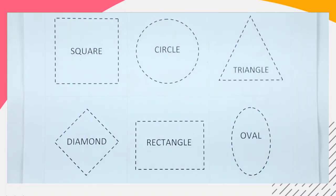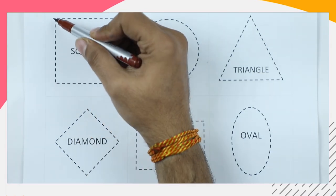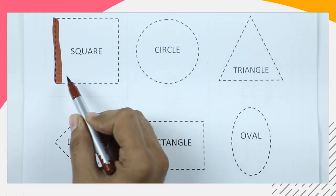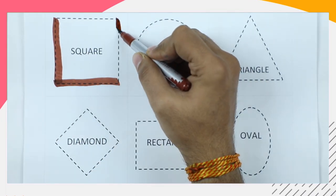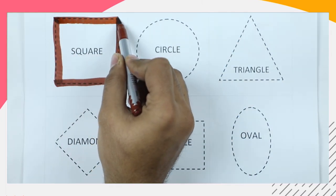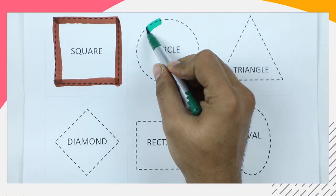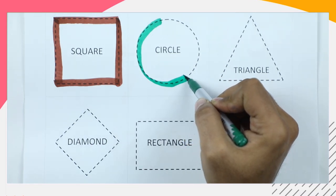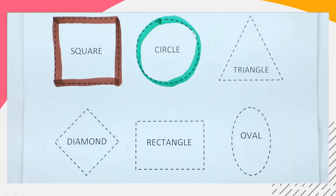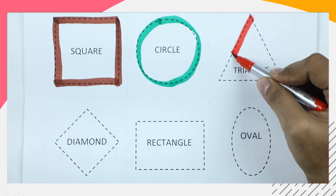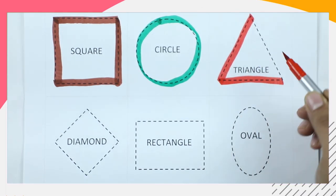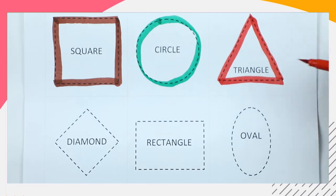It's a square. We draw a square with brown color — square. It's a circle, circle with green color — round circle. Triangle, we make a triangle shape with red color — it's a triangle.